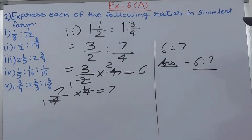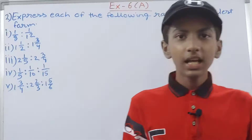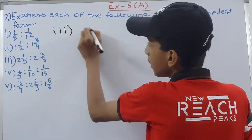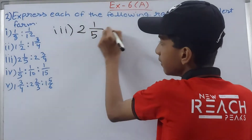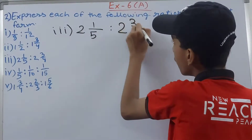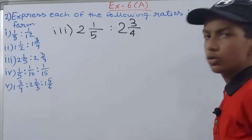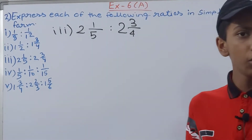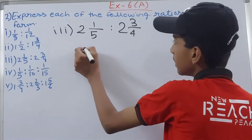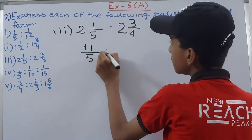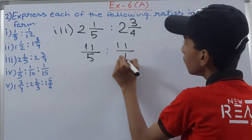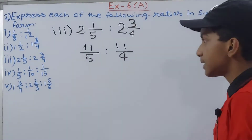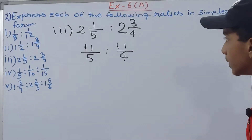Next, the third part: 2 whole 1/5 : 2 whole 3/4. We convert to improper fractions first. 2 whole 1/5 = 11/5, and 2 whole 3/4 = 11/4. The denominators are 5 and 4.